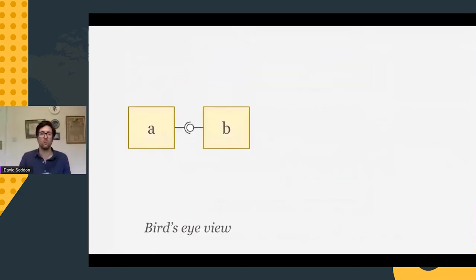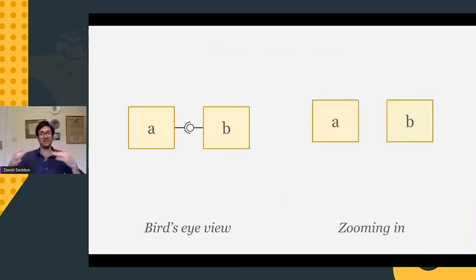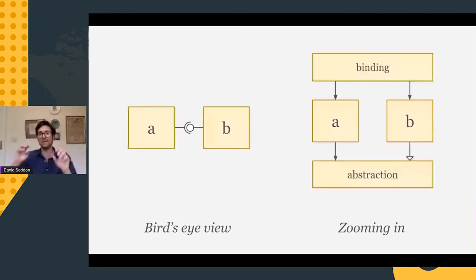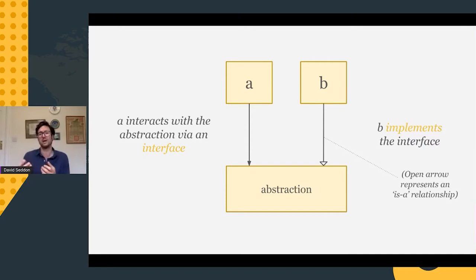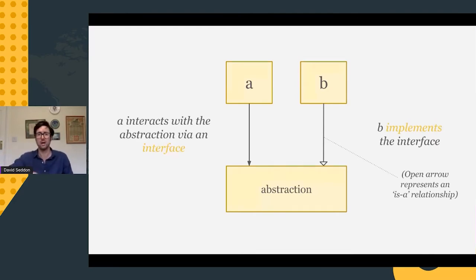So that's why you might use inversion of control — now how do you do it? To achieve this mechanism you need two extra things conceptually: an abstraction and a binding. A and B both know about the abstraction. The binding knows about both A and B. More specifically, A interacts with the abstraction via an interface, and B implements that interface. The binding is then where you actually plumb B into A.